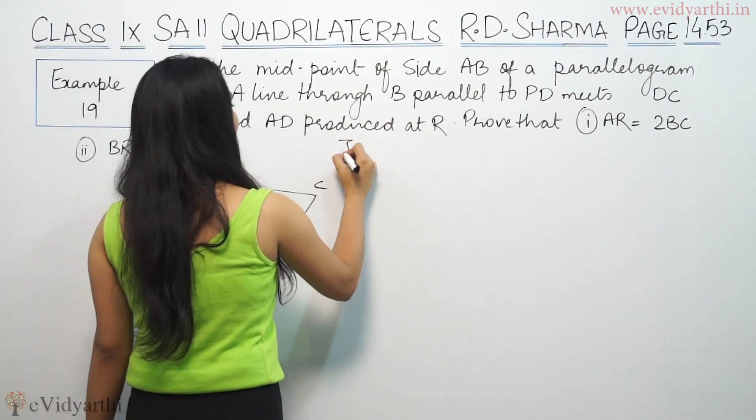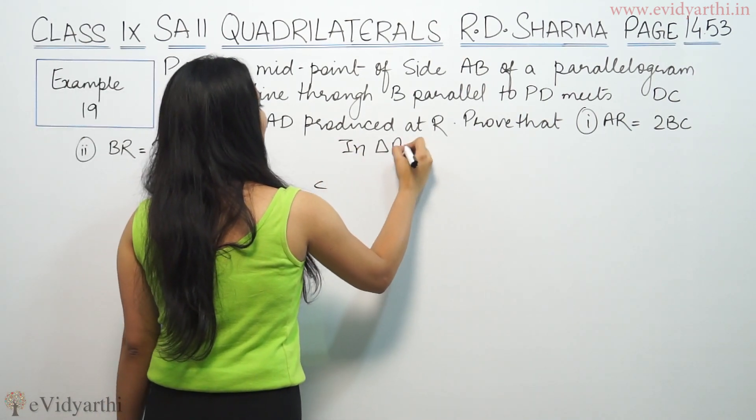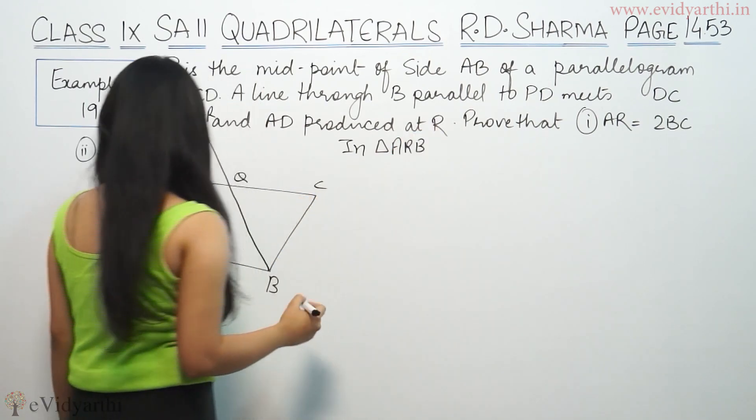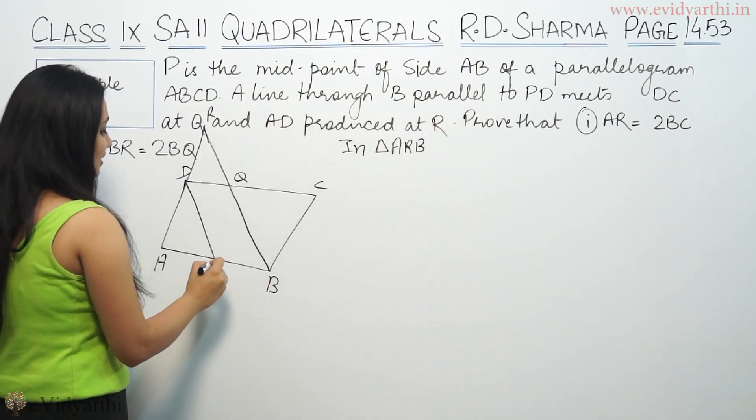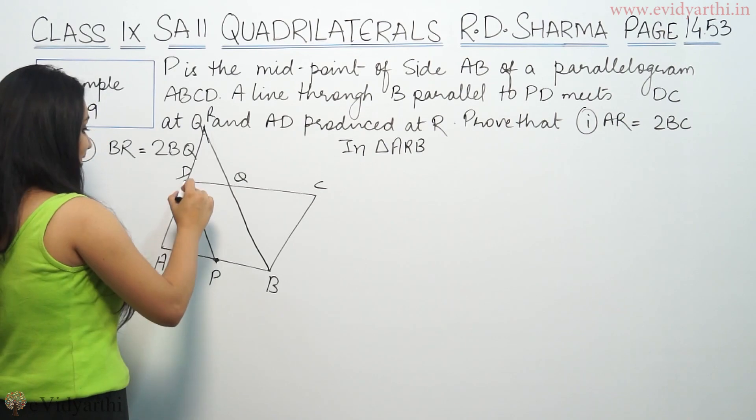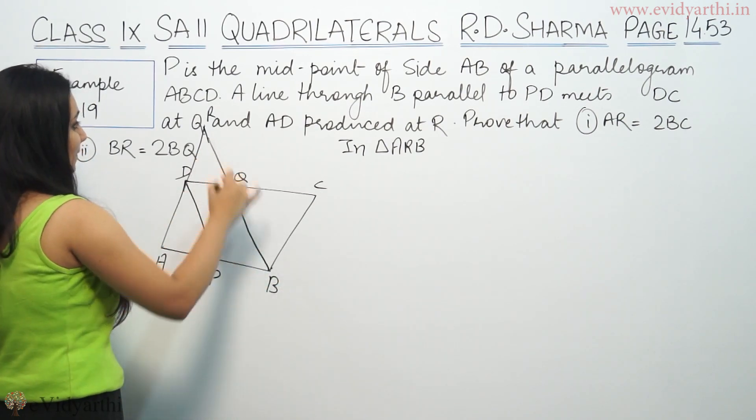In triangle ARB. You see P is the midpoint of AB and PD is parallel to BR.